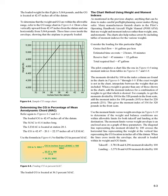Use the moment limits versus weight envelope in Figure 6-10 to determine if the weight and balance conditions are within allowable limits for both takeoff and landing at the destination. The moment limits versus weight envelope is an enclosed area on a graph of three parameters: the diagonal line representing moment divided by 100 crosses the horizontal line representing weight at the vertical line representing CG location in inches aft of the datum. When the lines cross inside the envelope, the aircraft is loaded within its weight and CG limits.